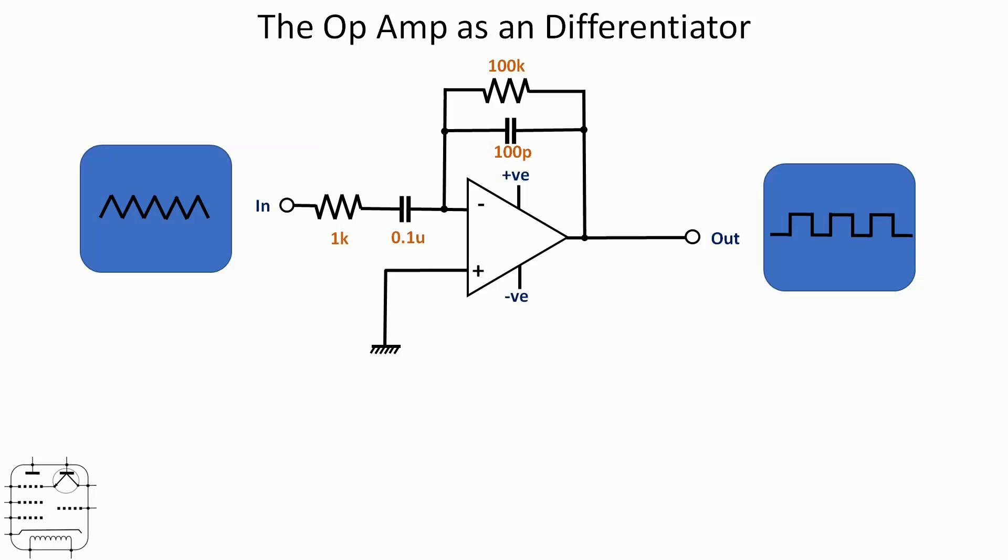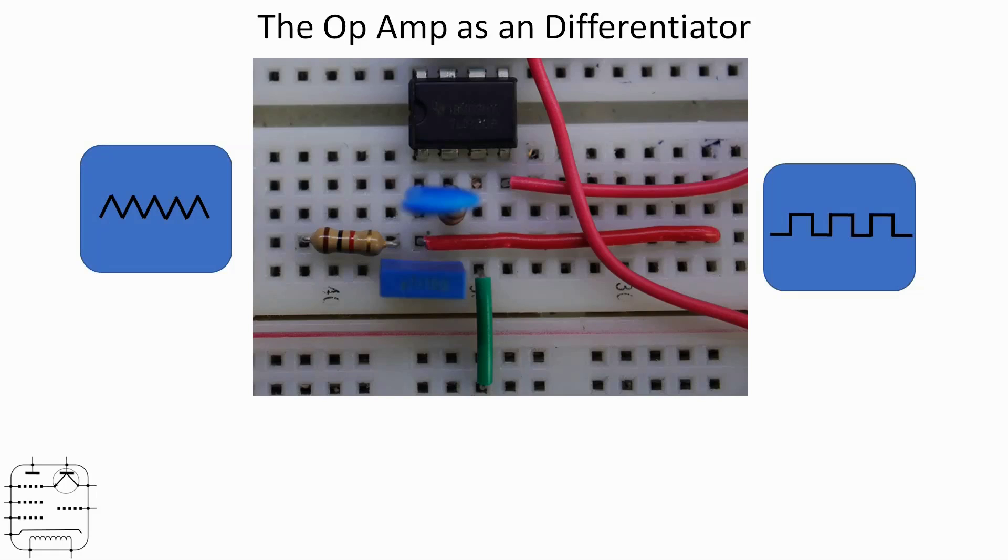On the breadboard, again incredibly simple. I'm just using the bottom half of the TL072. You can see the component values there: the 100p capacitor, the small blue one near the chip. The 100k resistor is mounted vertically. The 1k resistor where the input is on the left goes through that resistor, through the 0.1 microfarad capacitor and into the inverting input. The output which is off of pin 1 is the red wire that runs to the right hand side. That's where we'll be taking the output from. That's the differentiator, let's go have a look at that on the bench.